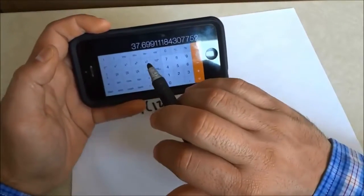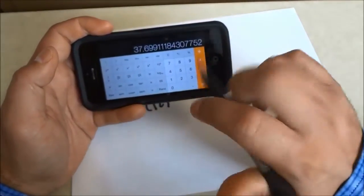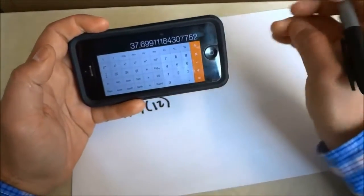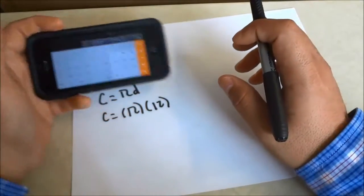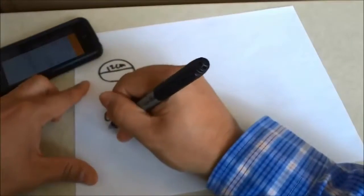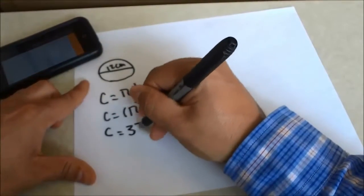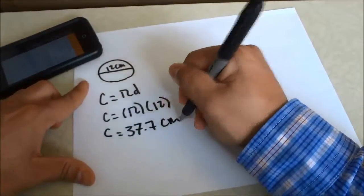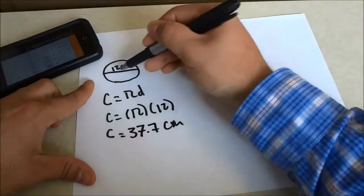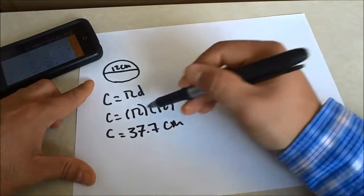And that is equal to 37.69 centimeters. But instead of doing that, I'm just going to round it to 37.7 centimeters. So the circumference is equal to 37.7 centimeters. And all that I did was I took the diameter and multiplied it by pi.